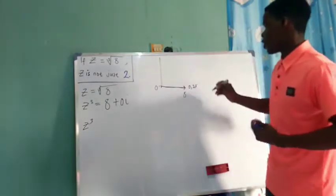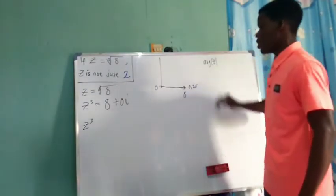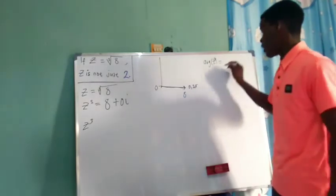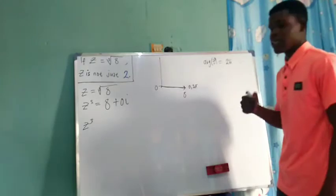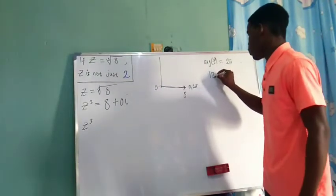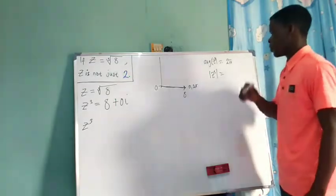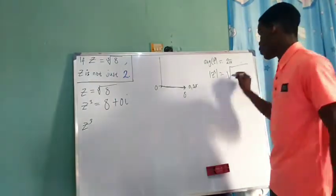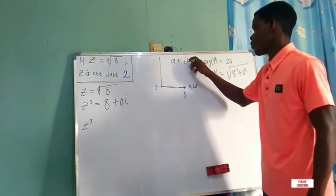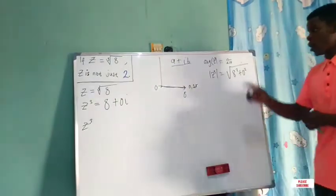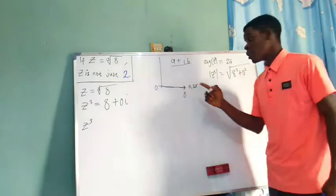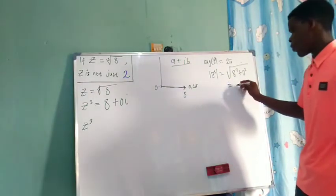The argument of z cubed is going to be 2π — or, as a tangent inverse of 0, it's just 0 or 2π. The modulus of z cubed is just the square root of a squared plus b squared, which is square root of 8 squared plus 0 squared. Here a and b come from the standard form of a complex number, a plus ib. So that is the square root of 64, which is positive 8.